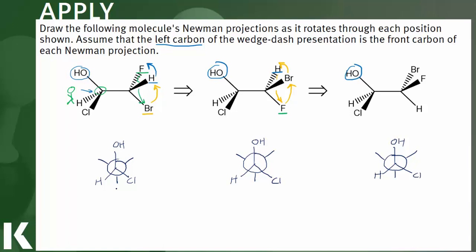And then if we look at that back carbon, we can just follow bromine around just like we did with the 3D model. Bromine starts out down here and then bromine moves up to the top right and then over to the top left. And we can draw hydrogen rotating around in its three positions and fluorine as well.